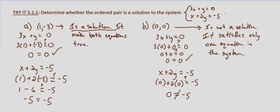So again, the process is essentially the same as it was when we were checking if ordered pairs were solutions to an equation. The difference is we have to check both equations in the system. And if it satisfies both equations, if it makes each equation true, then it is a solution to the system of equations. If it doesn't make one or the other of them true, or if it doesn't make both of them true, then it's not a solution to the system.